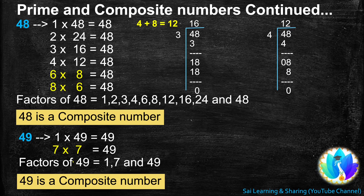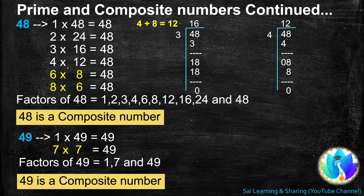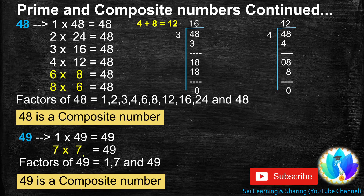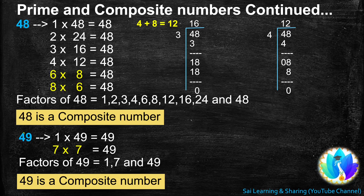You have to remember two rules to know when you have got all the factors of a number. Rule one: when both numbers in a factor pair have already occurred earlier, you have got all the factors. Rule two: when both factors are the same, you have also got all the factors of that number.